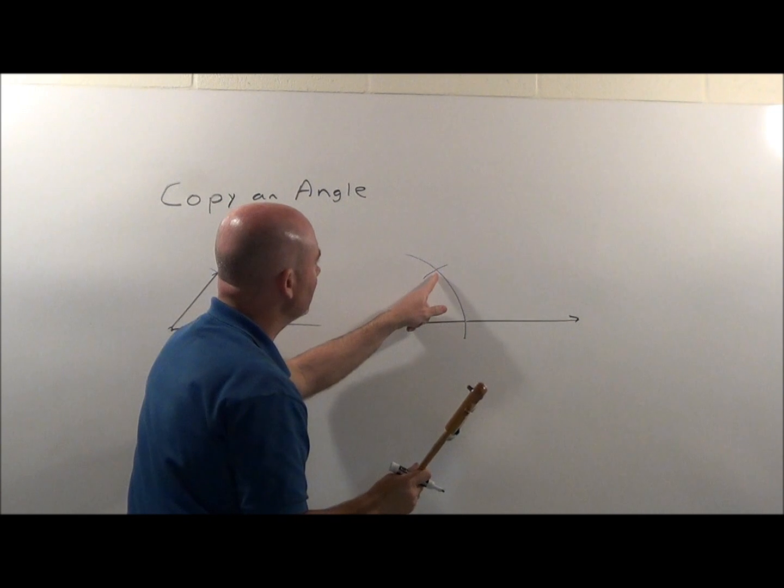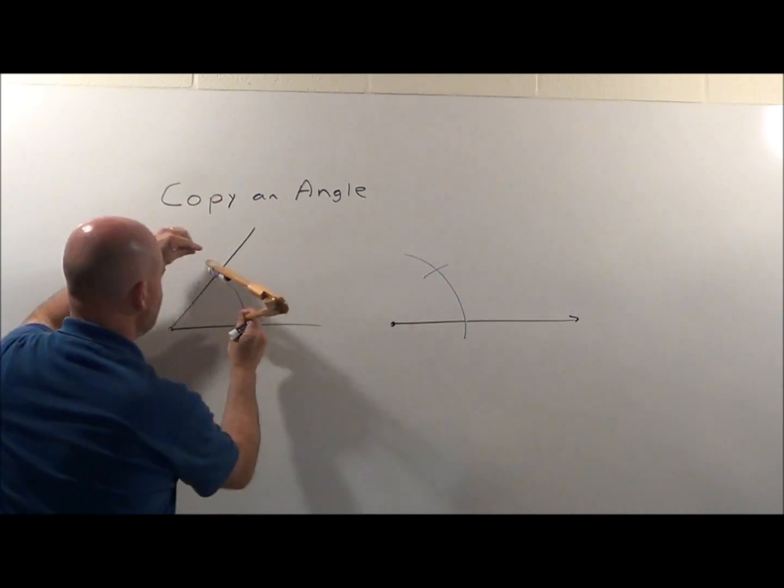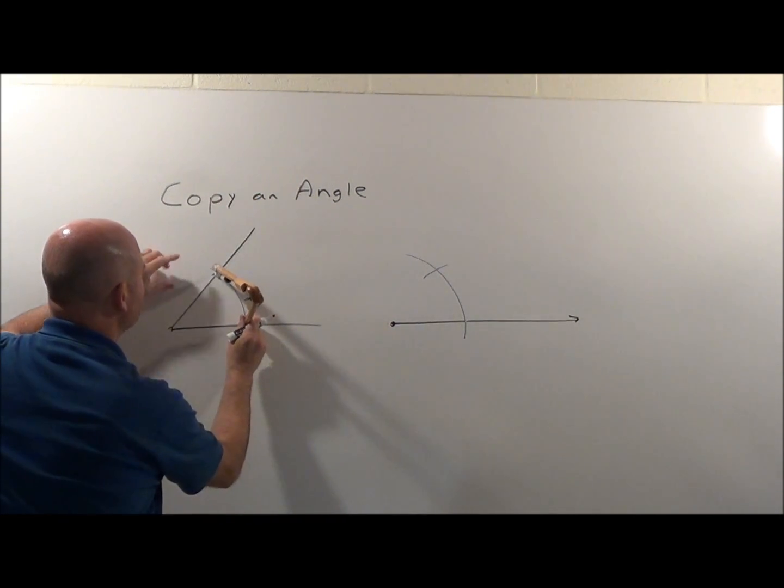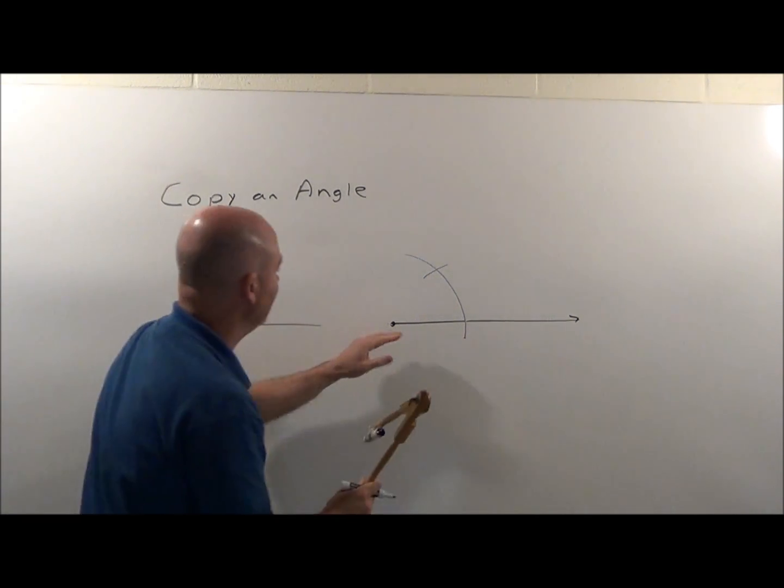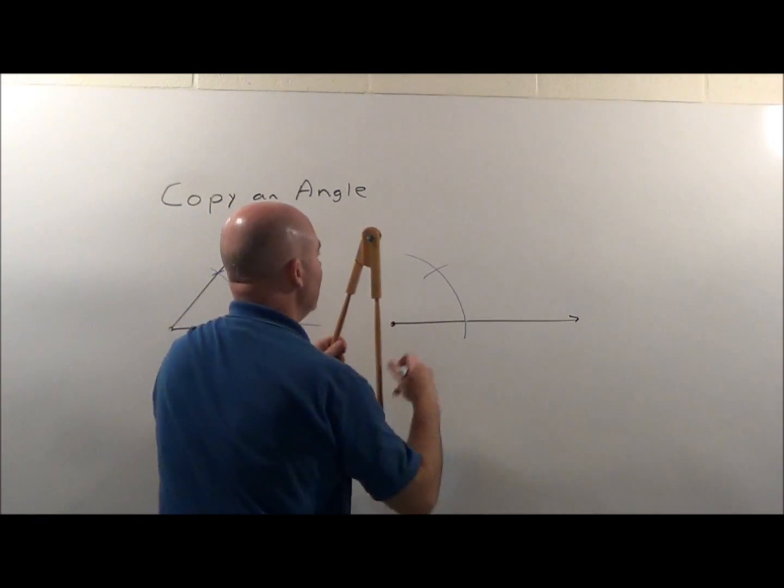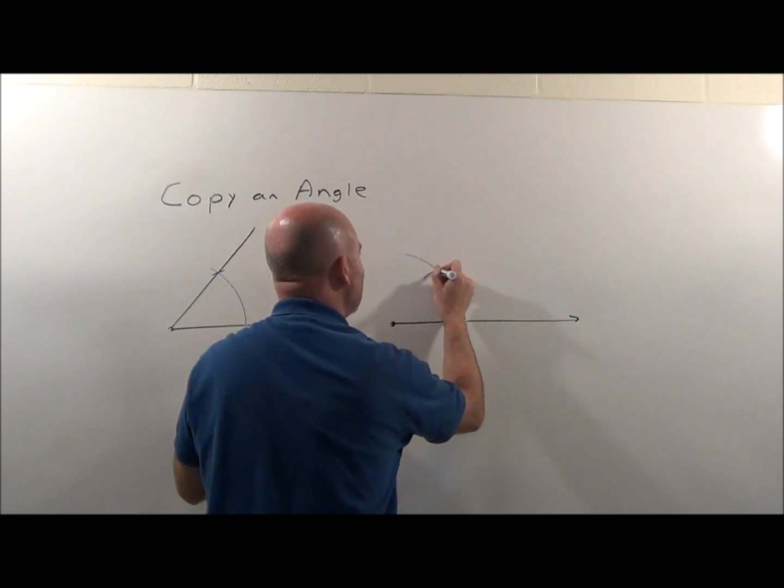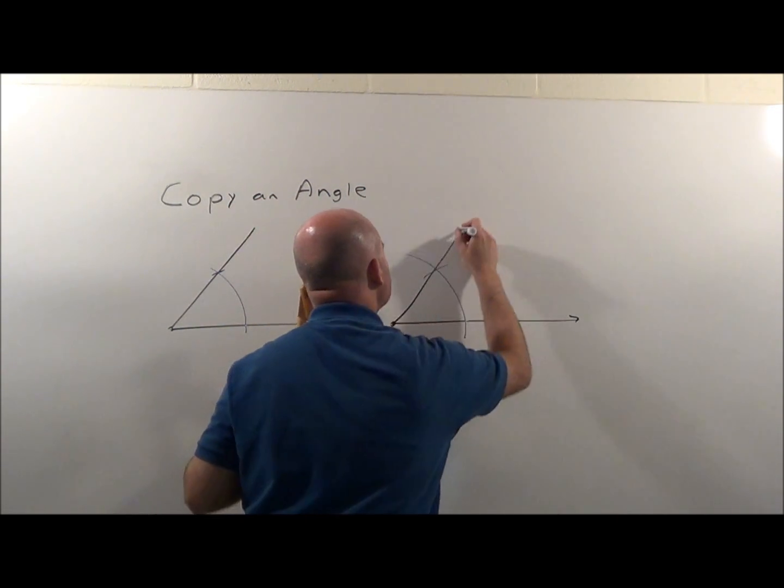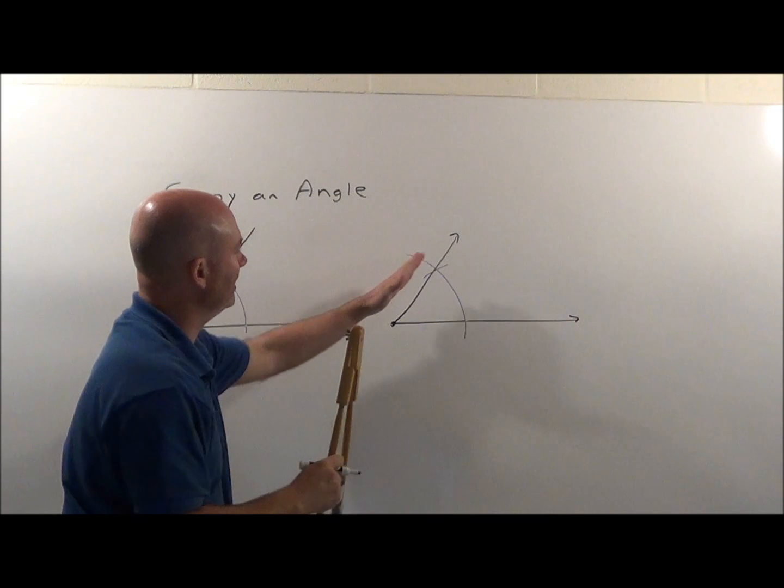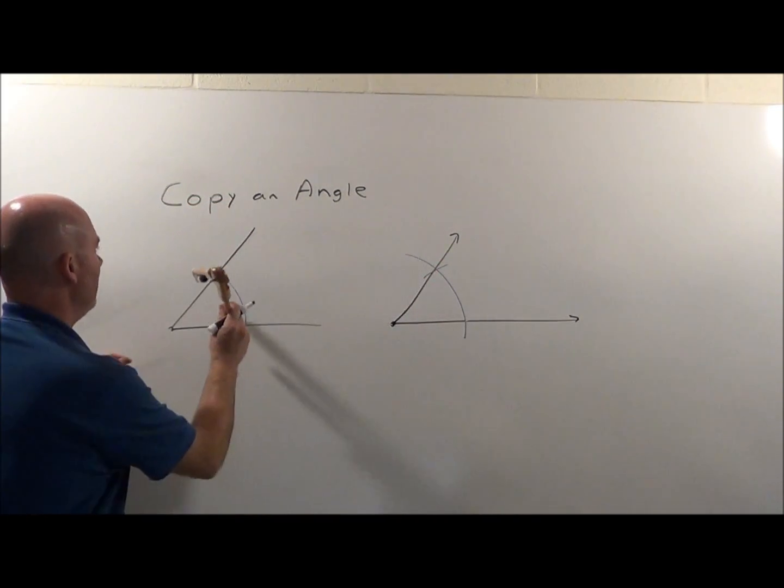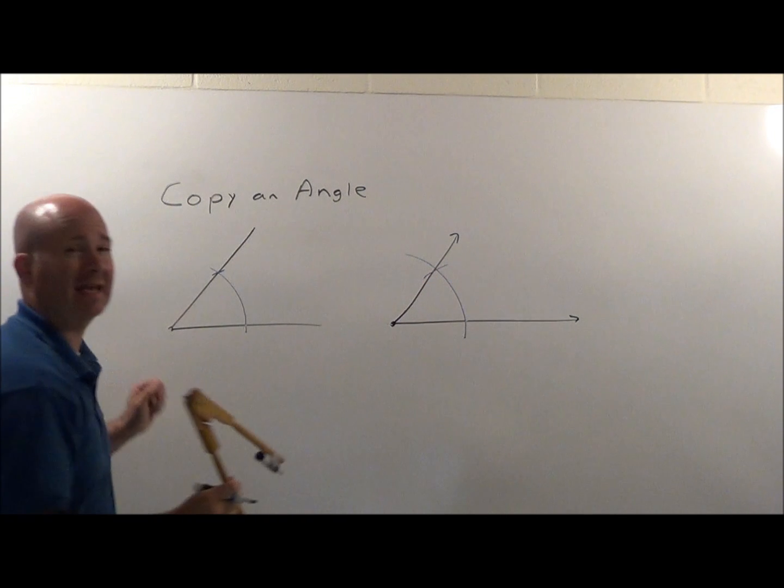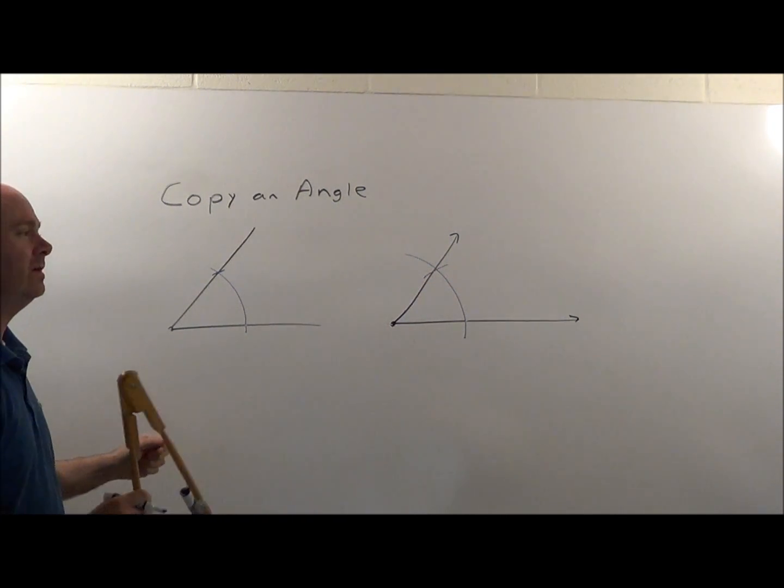You're going to see it creates the exact same angle opening from these points that are maybe, let's say, six inches away. So this point is six inches away, and I know the way I created it, this guy is going to be six inches away, so it's going to go through that intersection and I'll end up having the exact same angle opening.